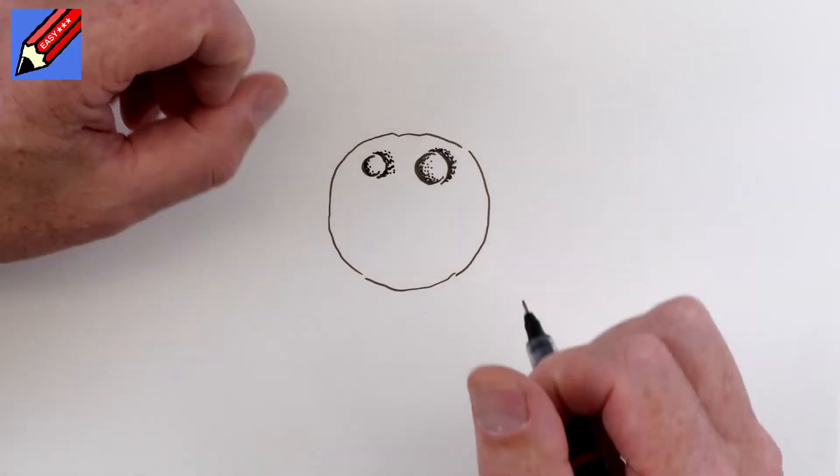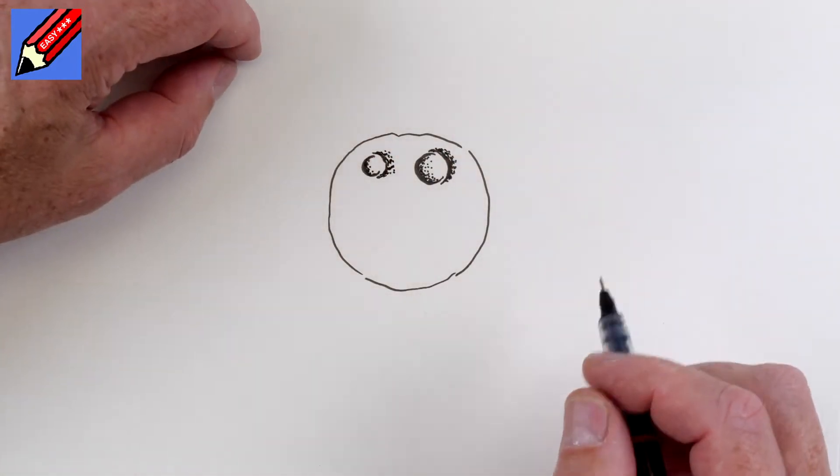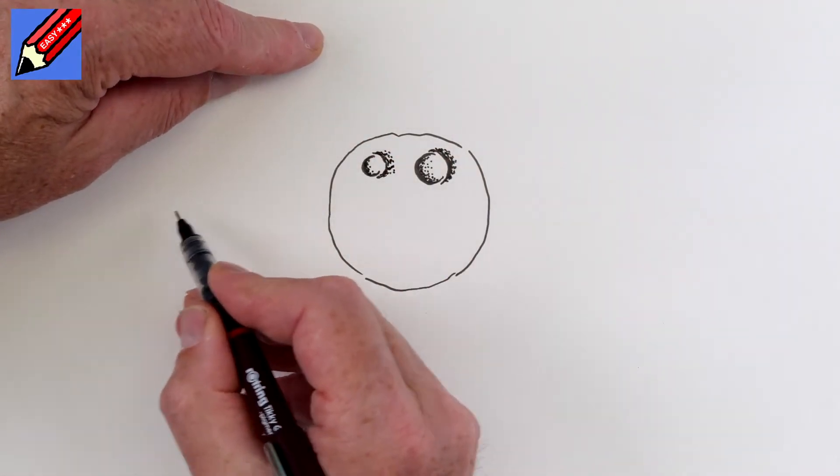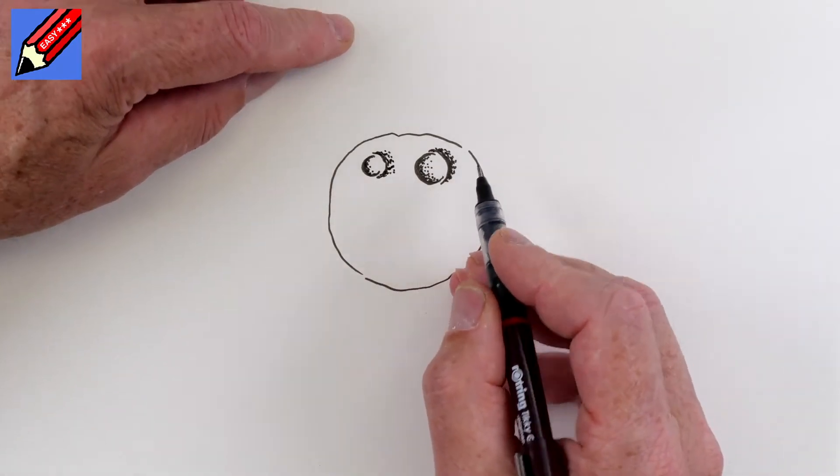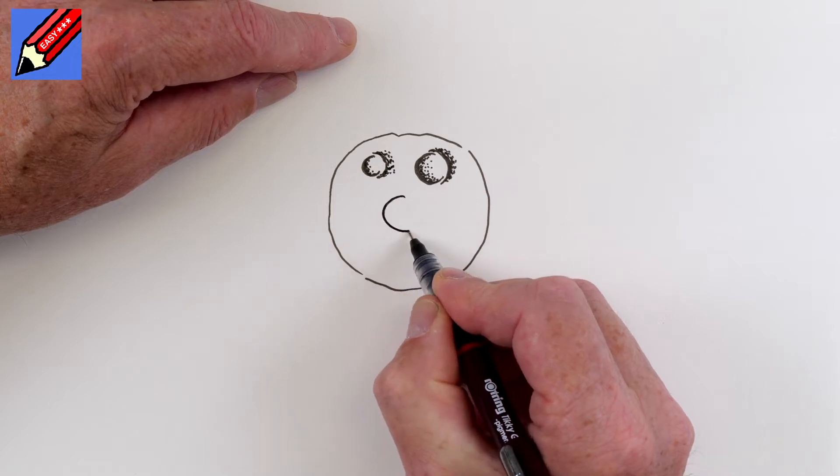And the stippling just gets further and further apart and spread out. So the closer the dots are together, the darker the shading. And the further apart, the lighter the shading. So here the sunlight is sort of coming this direction. And we can put another one there.